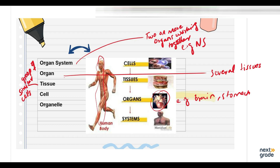Then there is the tissue level — a group of similar cells that perform a specific function. Examples include muscular tissue and glandular tissue. You can see these illustrated in the picture as well.